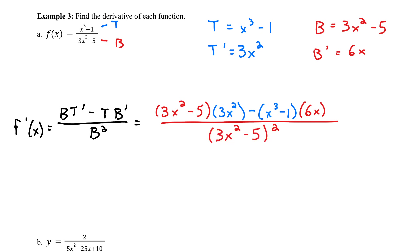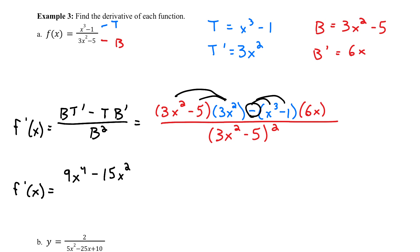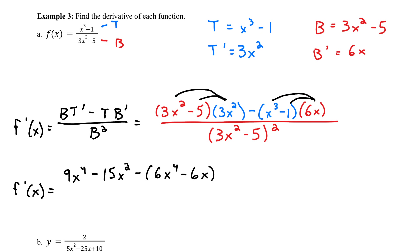In my numerator, I've got to distribute 3x squared, giving me 9x to the 4th minus 15x squared. Be really careful with the minus sign. Some students will distribute it in both places — we only want to distribute it at one of those times. So let's distribute the 6x first and come back to the minus sign in the next step. That gives us minus, in parentheses, 6x to the 4th minus 6x, all over 3x squared minus 5, quantity squared.